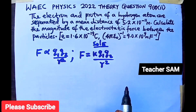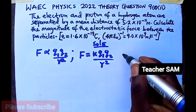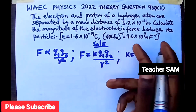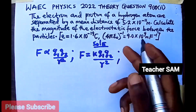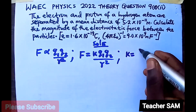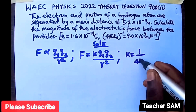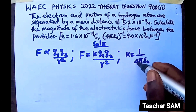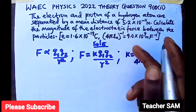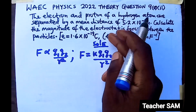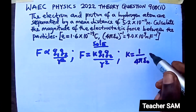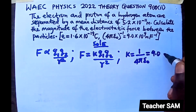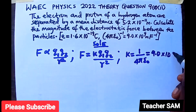We are going to use that equation right away. We know that K is always 1 over 4 pi epsilon-naught, which is the inverse of 4 pi epsilon-naught. This has been given to us to be equals to 9.0 times 10 raised to power 9.